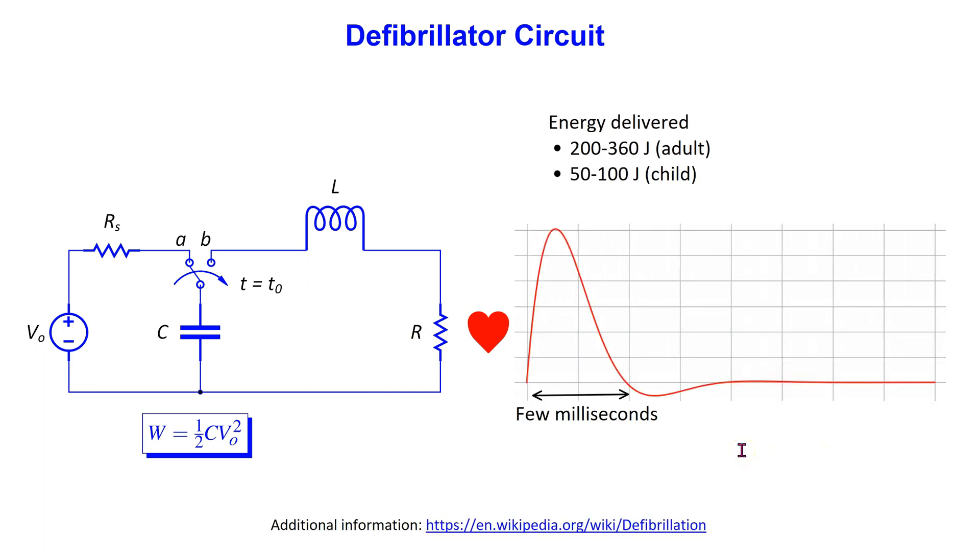Modern defibrillators are calibrated not in terms of energy stored in the capacitor, but in terms of energy delivered to the heart. Typically the energy delivered is in the range 200 to 360 joules for an adult and 50 to 100 joules for a child.